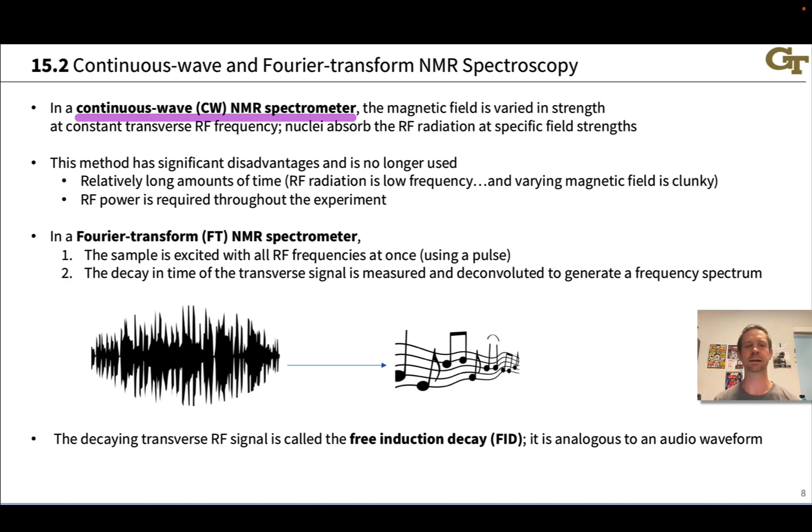These days, CW NMR is essentially completely gone because of practical difficulties. So it takes a long amount of time, and we need radio frequency power throughout the experiment, even though as we saw in the simulation in the last video, we turn off that horizontal RF generator to observe the signal coming from the sample.